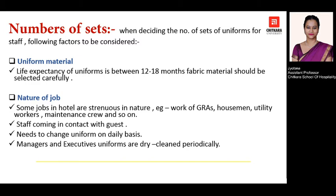Uniform material plays a very important role. The life expectancy or life cycle expected from a fabric uniform is somewhere between 12 to 18 months, and we have to make sure that the material we are selecting fulfills this requirement.